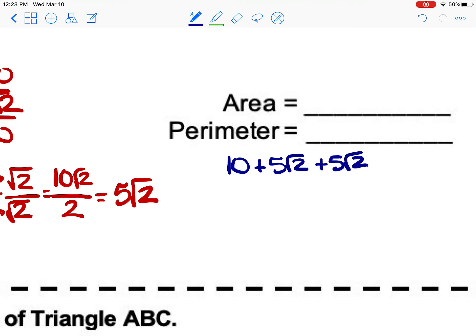Well, you can only combine like terms, and the only like terms we have are these two. So we bring down that 10. How many square roots of 2 do we have? We have 10 square root of 2. Those two are not like terms, so they cannot be combined. So that becomes your perimeter.